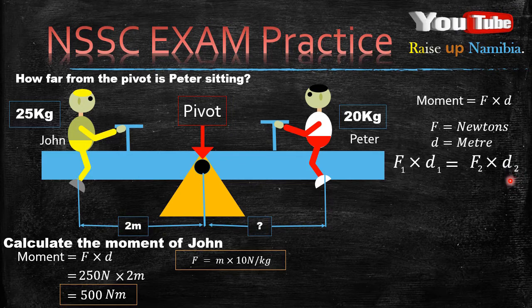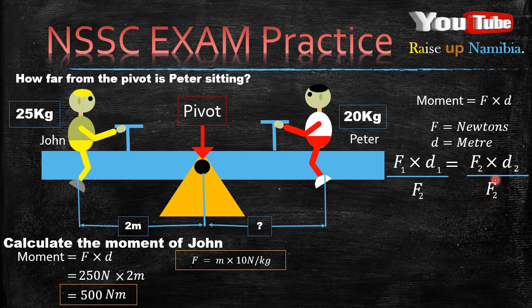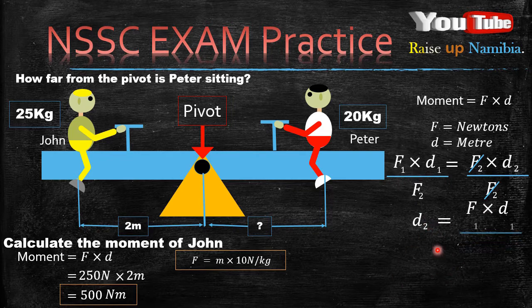Knowing that we are looking for D2, we make D2 the subject of the formula. D2 is multiplied by F2, so we get rid of F2 by dividing both sides by F2. On the right hand side, F2 in the numerator and denominator cancels out, leaving us with D2 equals F1 multiplied by D1 divided by F2.